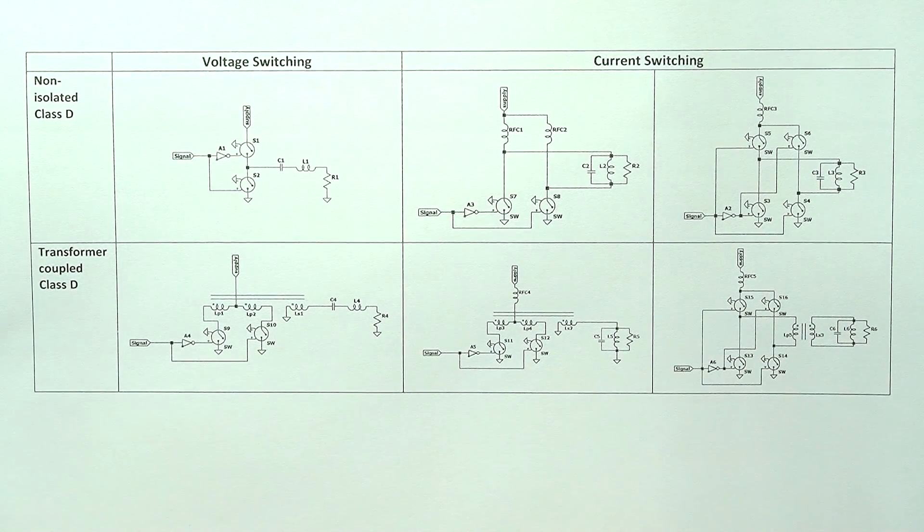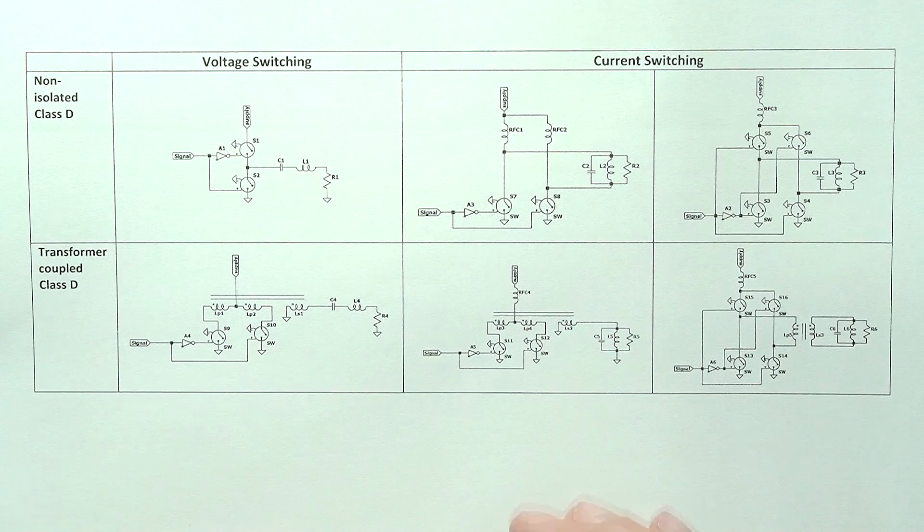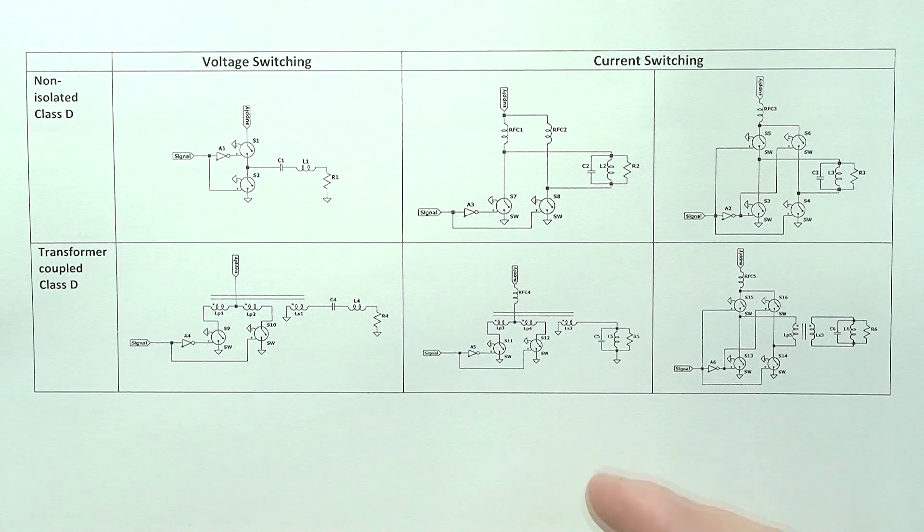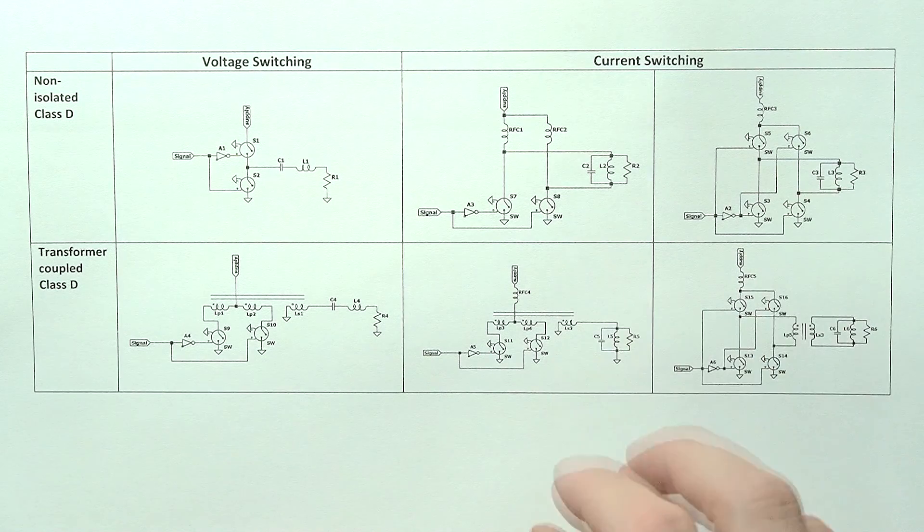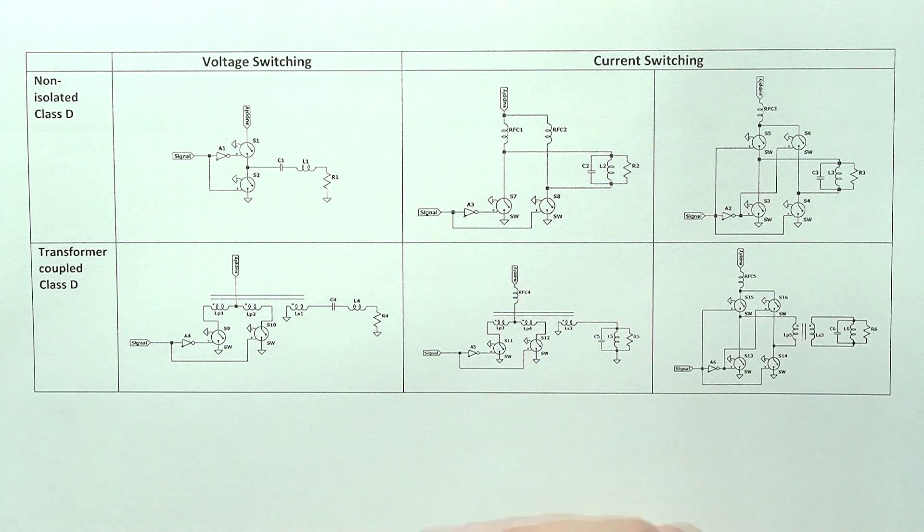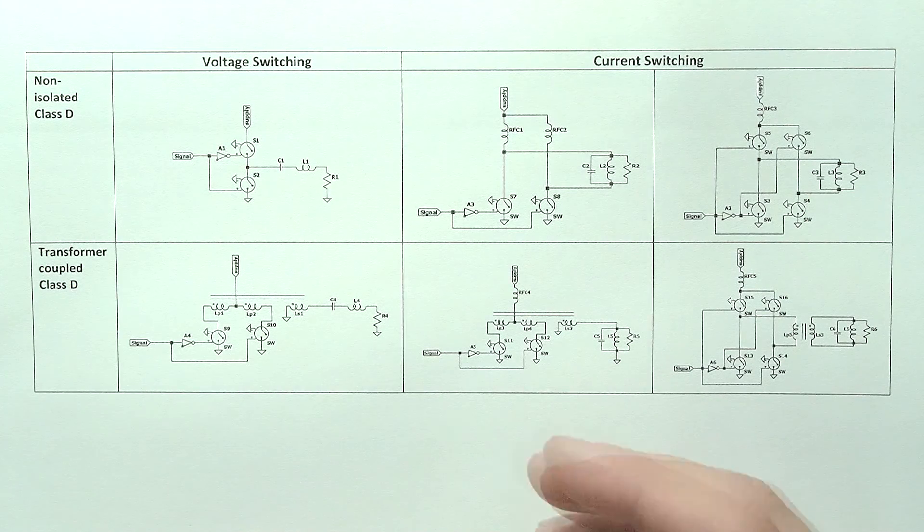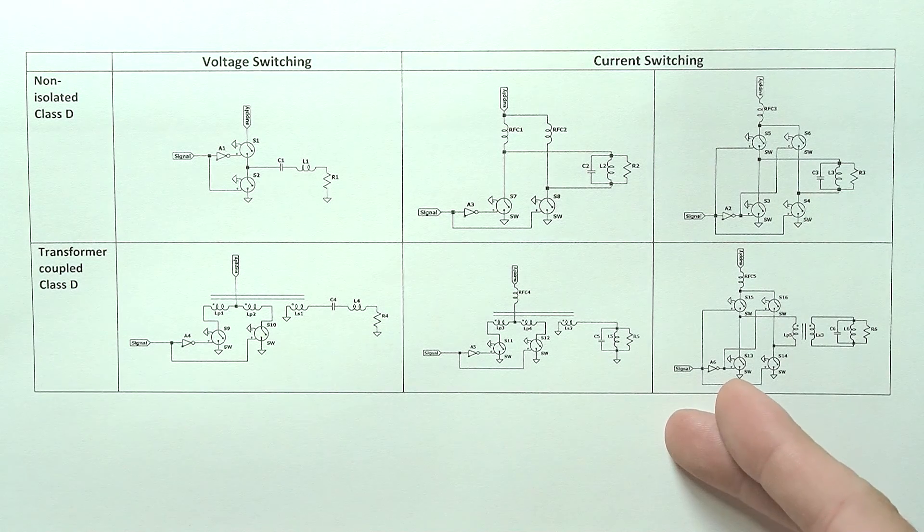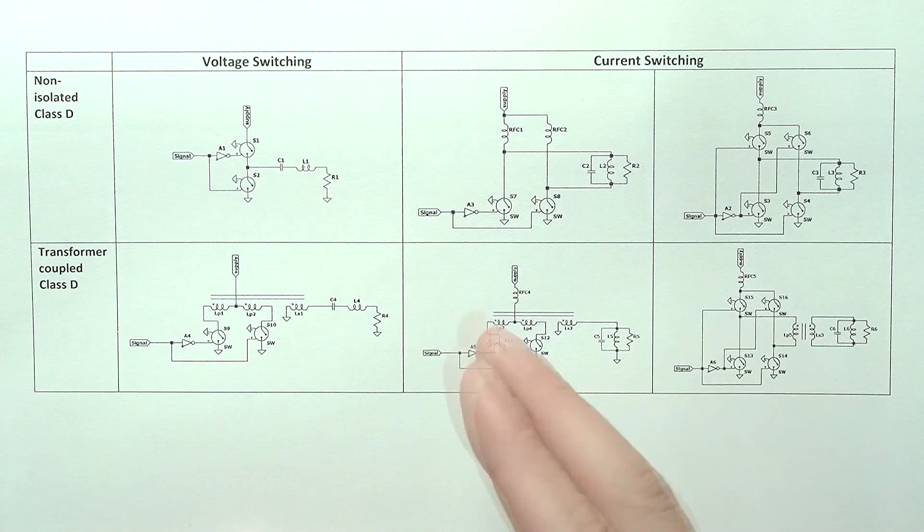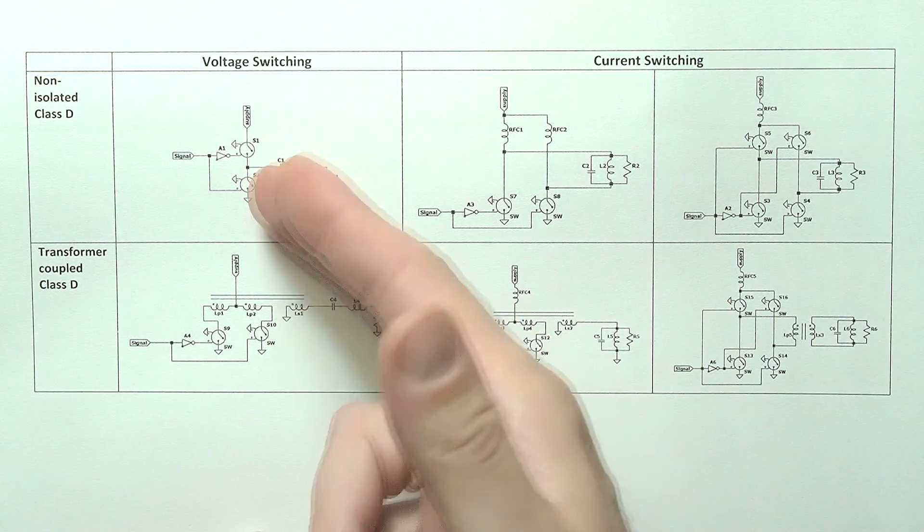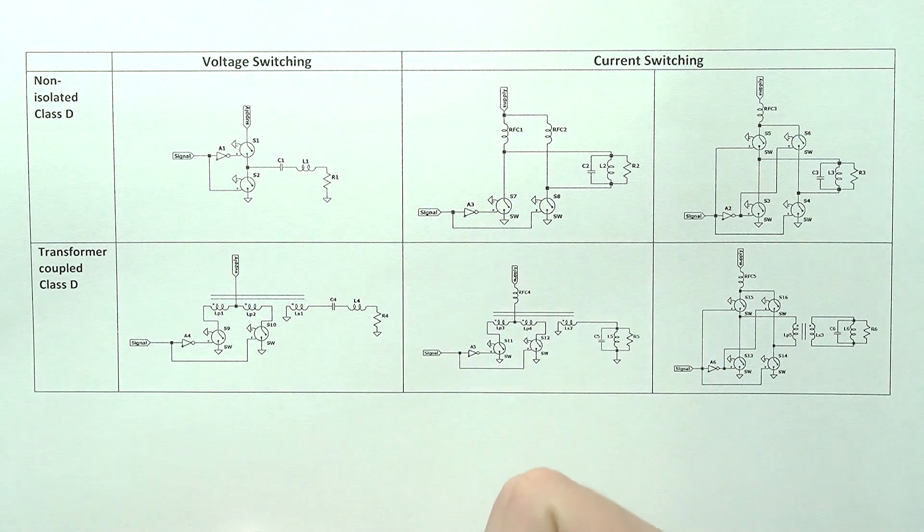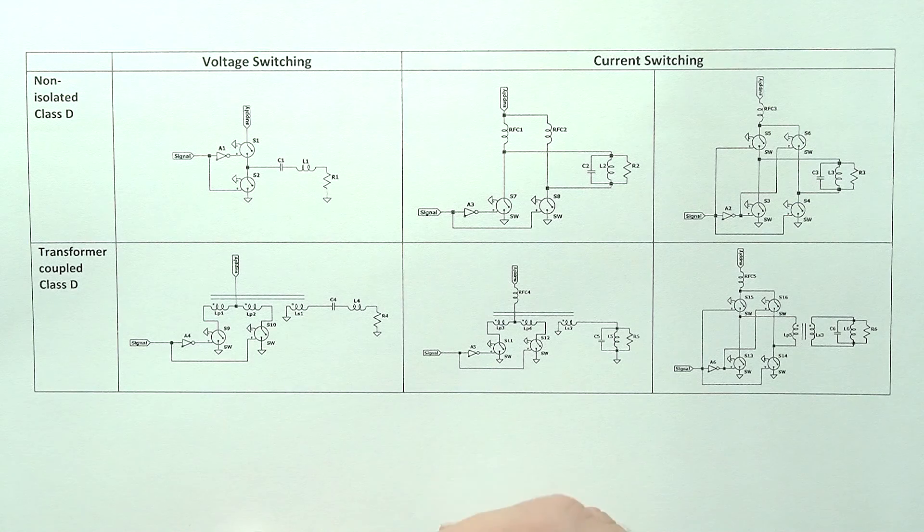Last time we've seen that there are a lot of possible topologies for the RF Class D amplifier. You have the basic voltage and current switching versions, the current switching one having a 2 and 4 switch variant, and then you can also add a transformer into the mix, both for the voltage and the current switching versions. Now for the sake of simplicity, I would choose the voltage switching circuit without a transformer. So other than the tuned RLC circuit, it only needs the switches. So this should be the simplest to build.